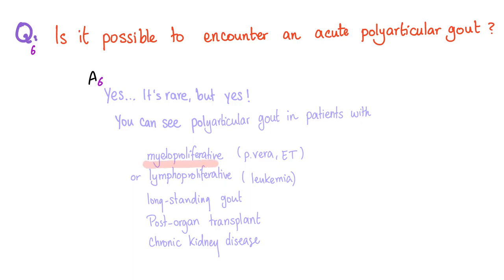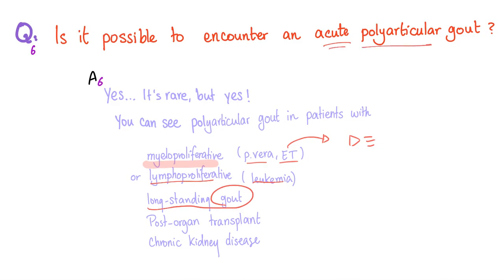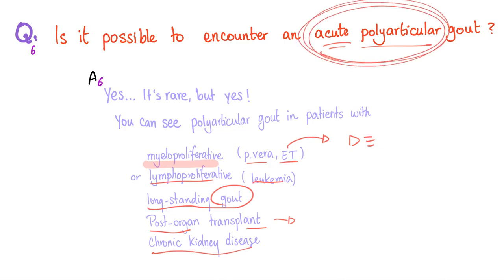You can see it in myeloproliferative neoplasms such as polycythemia vera and essential thrombocytosis. Hyperuricemia and even gout can occur with myeloproliferative neoplasms or lymphoproliferative disorders such as leukemias. Long-standing gout can lead to acute polyarticular gout, as can post-organ transplant hyperuricemia and chronic kidney disease, because the kidney cannot excrete uric acid, allowing it to accumulate to toxic levels.